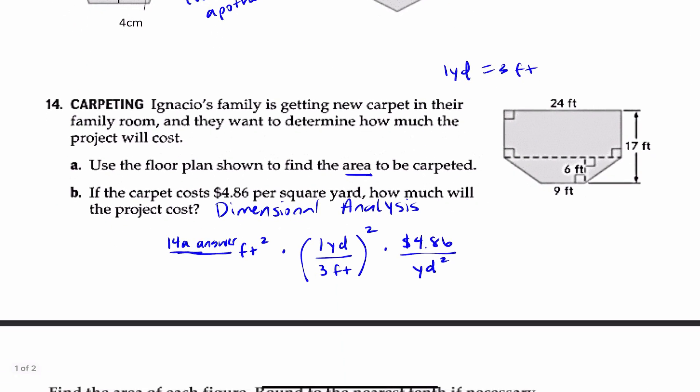Number 14, Ignacio's family is getting new carpet in their family room, and they want to determine how much the project will cost. Part A, use the floor plan shown to find the area to be carpeted. So as you can see, this picture contains two figures all in one.